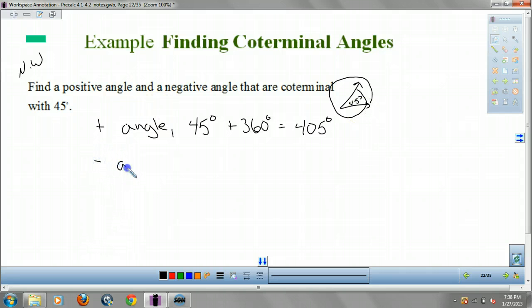So for your negative angle, what do you think you do? Well, you go 45 minus 360. So that's negative 315 degrees. What that means is you start here and you go clockwise until you hit the 45. So you just made it negative because you spun the other way around.